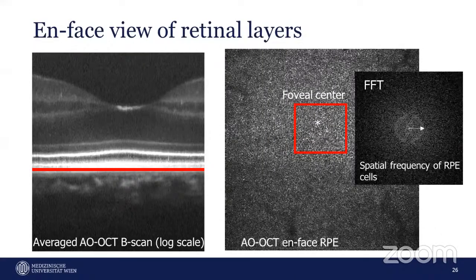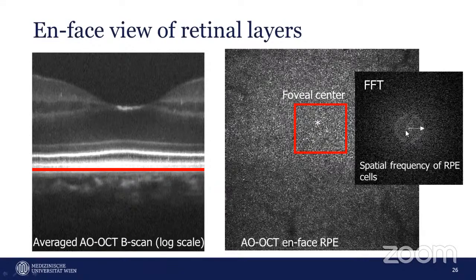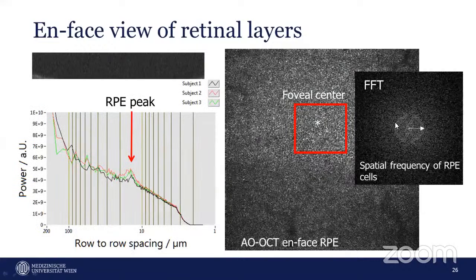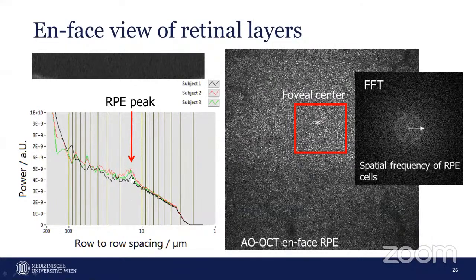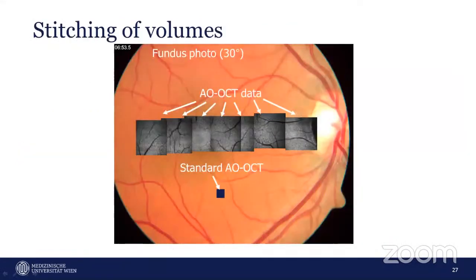Applying FFT to the RPE layer area reveals the spatial frequency of RPE cells, which differs from the spatial frequency of photoreceptors. Images were acquired from three different subjects, and by averaging within a circle at the specific spatial frequency, RPE cells from different subjects show similar spatial frequencies. Since the field of view has been extended from one by one degree to four by four degrees, we can now acquire volume images at different retinal locations to further extend coverage.